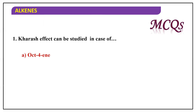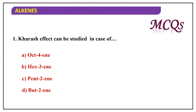MCQ: The Kharash effect can be studied in the case of — oct-1-ene, hex-3-ene, pent-2-ene, or but-2-ene. The Kharash effect applies only to unsymmetrical alkenes. Among the options, pent-2-ene is unsymmetrical whereas every other compound is symmetrical, so pent-2-ene is the answer.